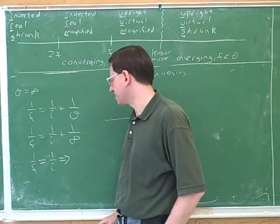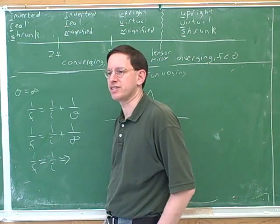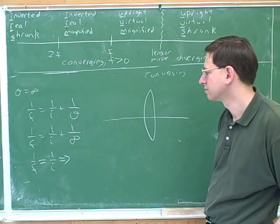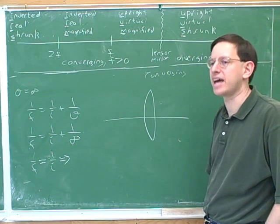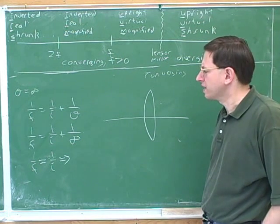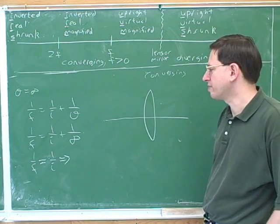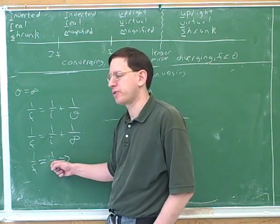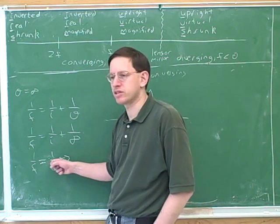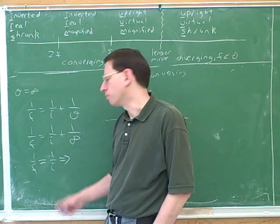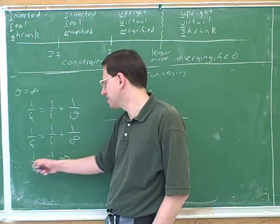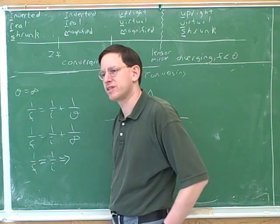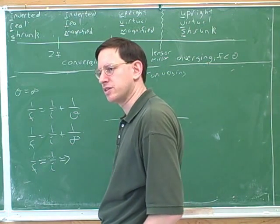This equation still has fractions, and it would be simpler without them. Once we only have one fraction on each side, the easiest thing to do algebraically is take the reciprocal of both sides.